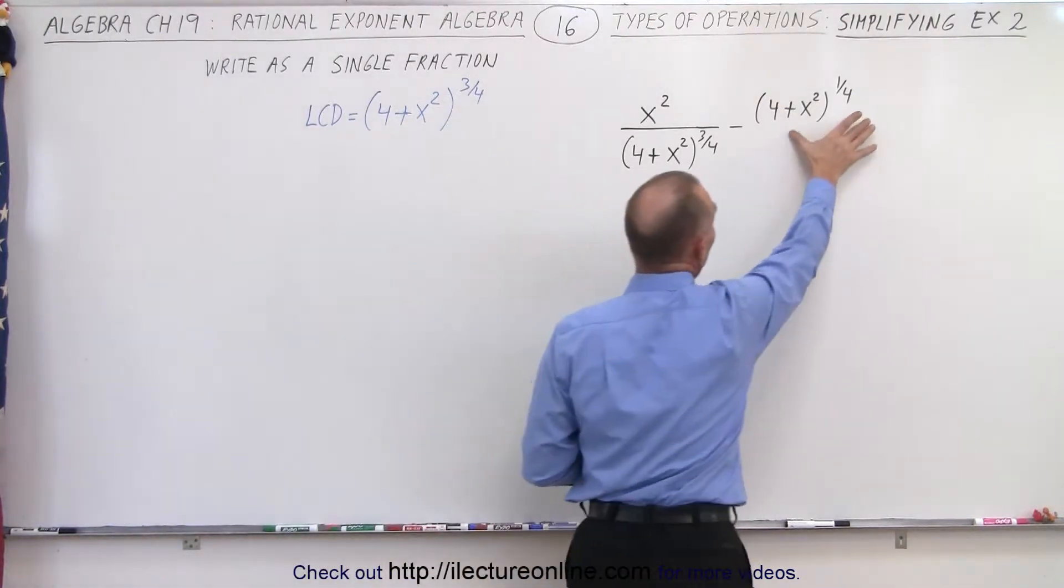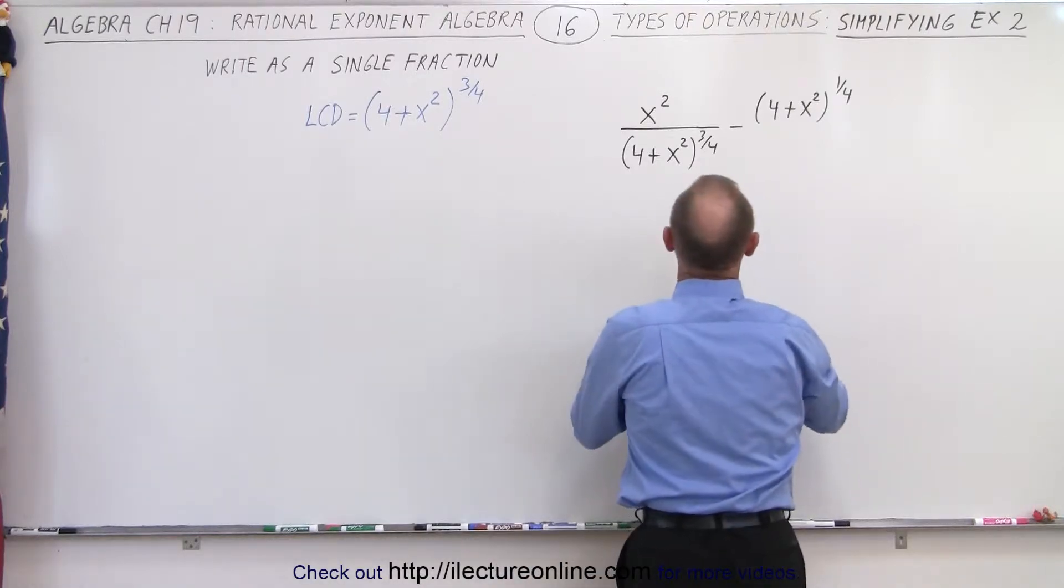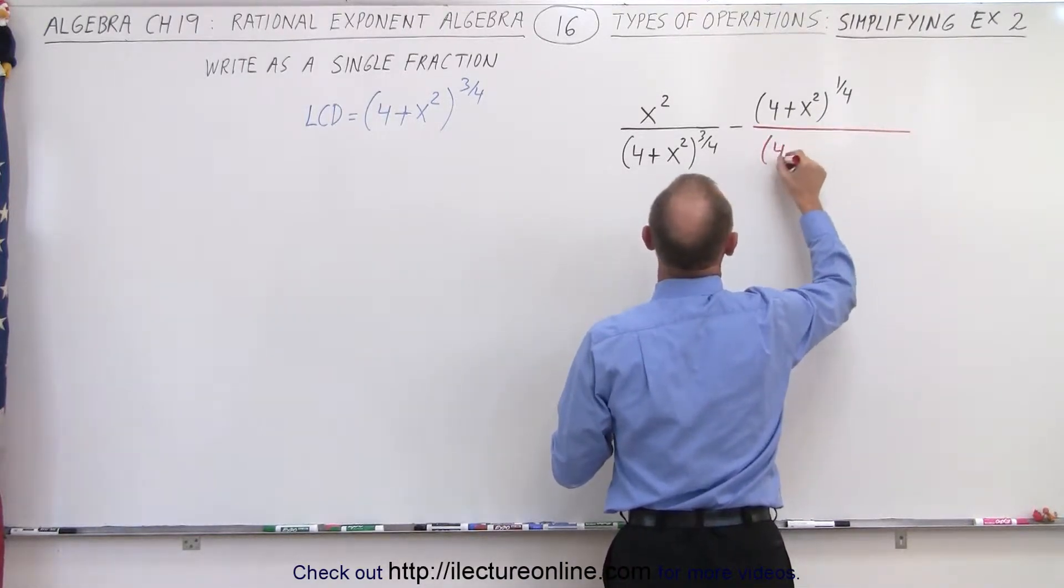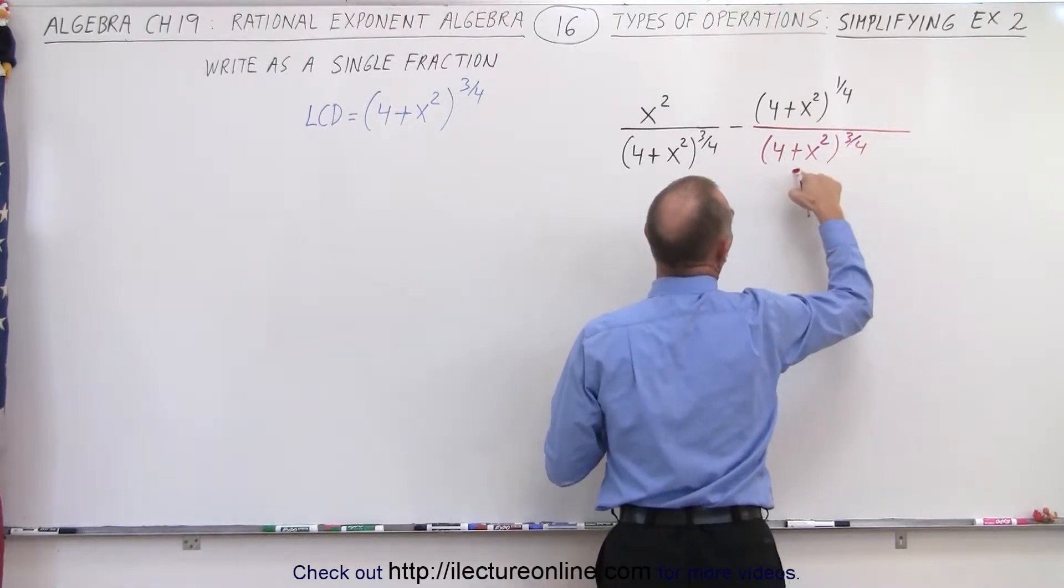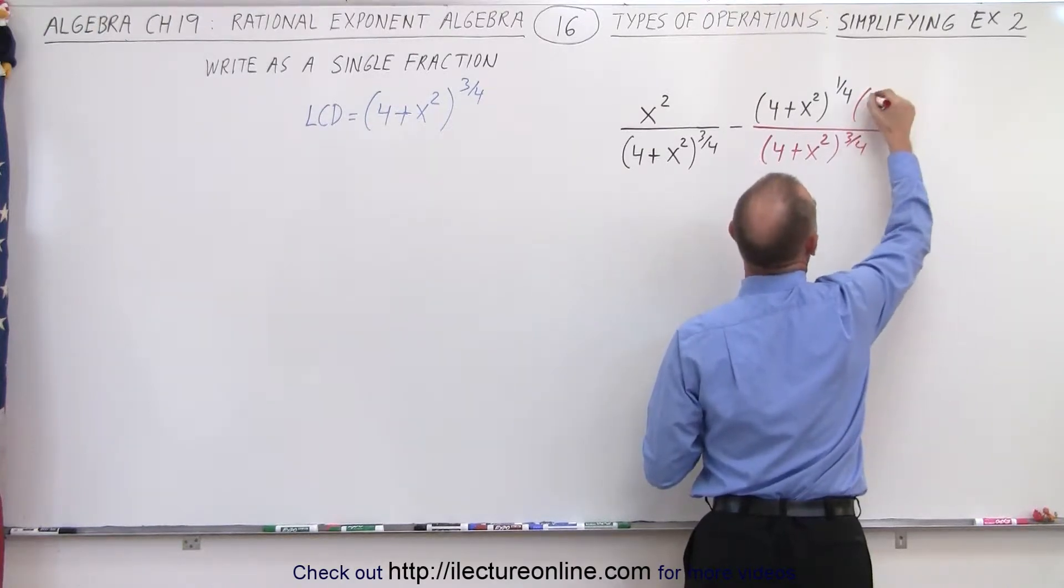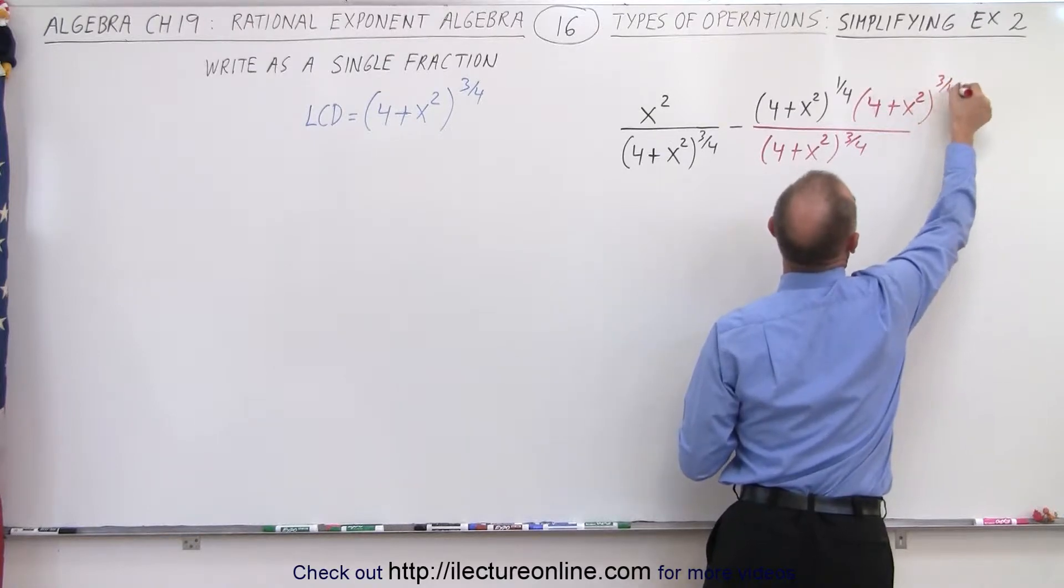So that means in this case here we're going to have to multiply both the top and the bottom by that same quantity. So we're going to multiply this by (4+x²) to the 3/4 power. I'm going to divide it and multiply it by (4+x²) to the 3/4 power.